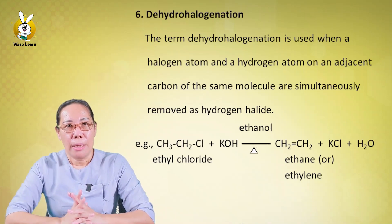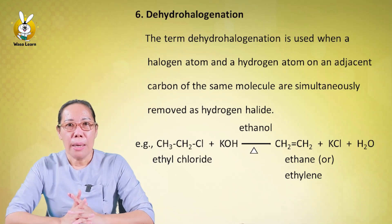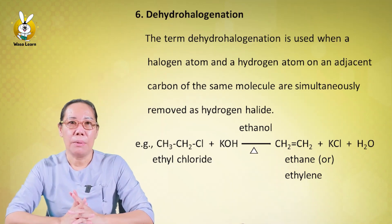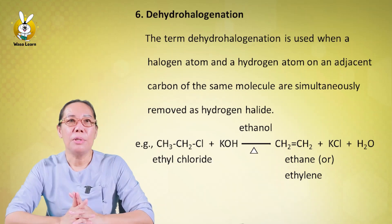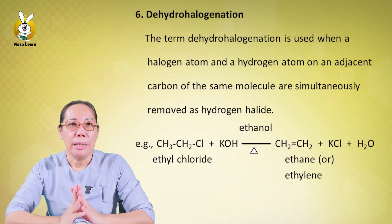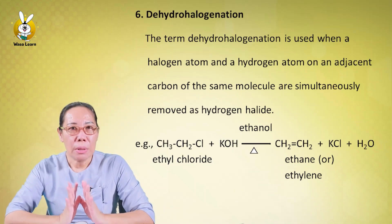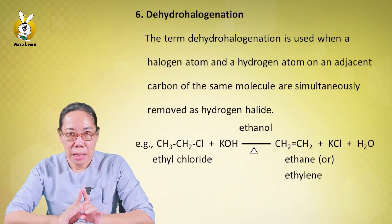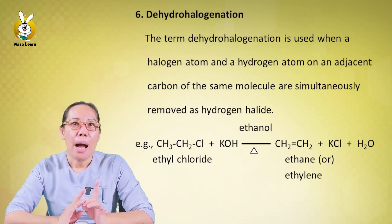Dehydrohalogenation occurs when a hydrogen atom and a halogen atom on an adjacent carbon of the same molecule are simultaneously removed as hydrogen halide.